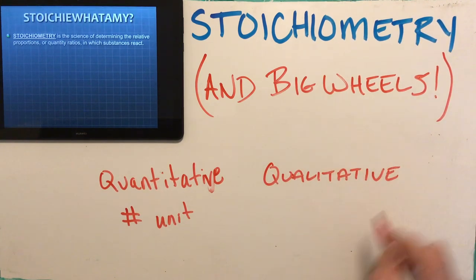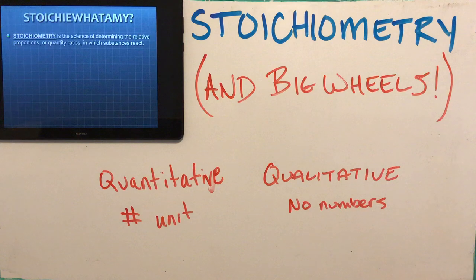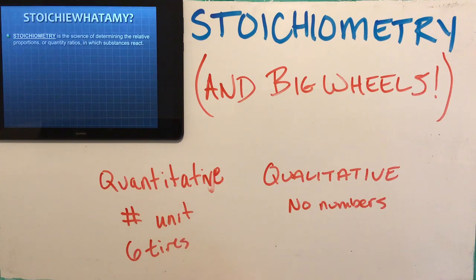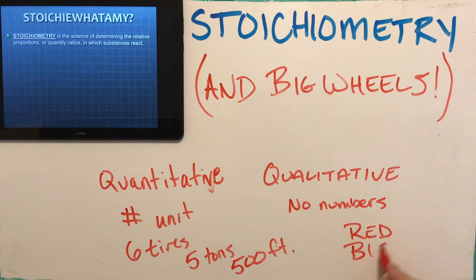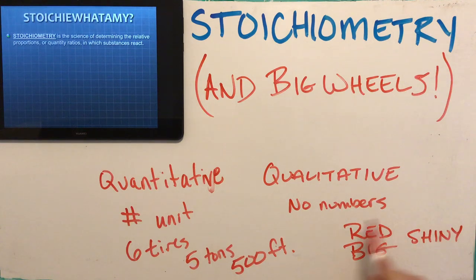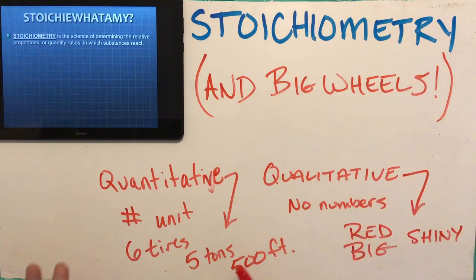Qualitative can also be used to describe something, but here you're using things that don't use numbers. For example, if you were to describe a fire truck, you might say it has six tires, it is five tons, one of the hoses is 500 feet — number, unit, number, unit. That's quantitative. Qualitative would be: it's red, it's big, it might be shiny — these still describe the fire truck but in a qualitative way.